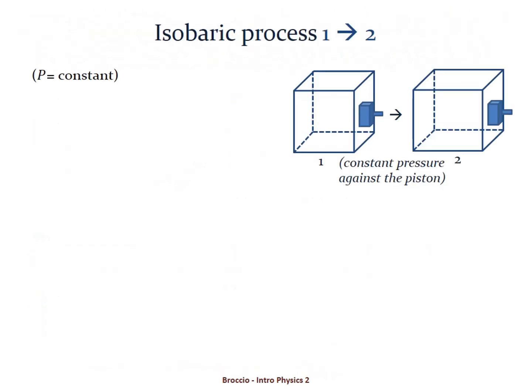The first part is an isobaric process because pressure is constant. We can write the ideal gas law twice for state 1 and state 2 and then solve for pressure